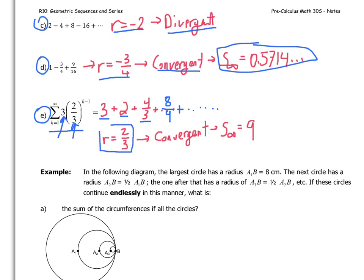Anyway, it tells us right away then that r is 2 thirds, which means we're convergent. And using the infinite sum theorem, we end up with the infinite sum using the formula is exactly 9.